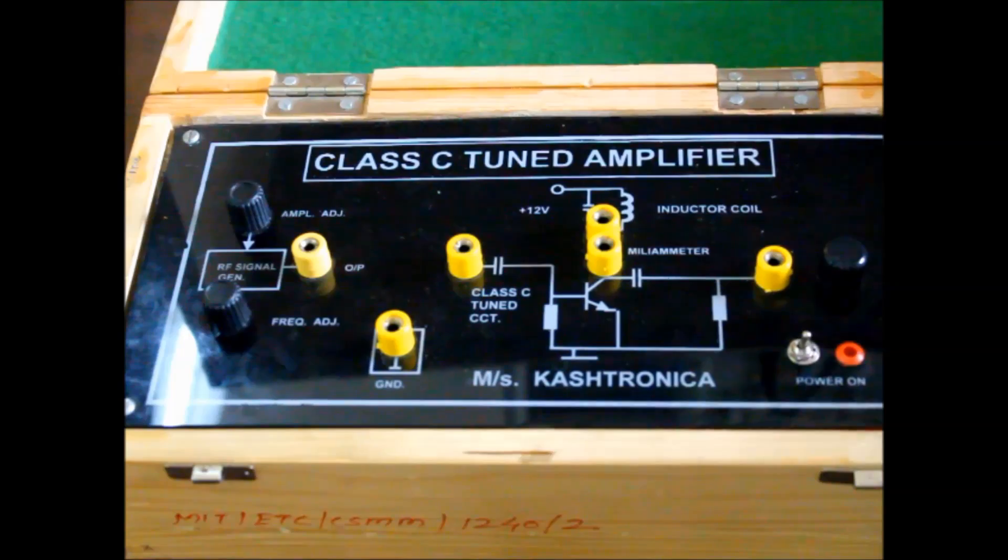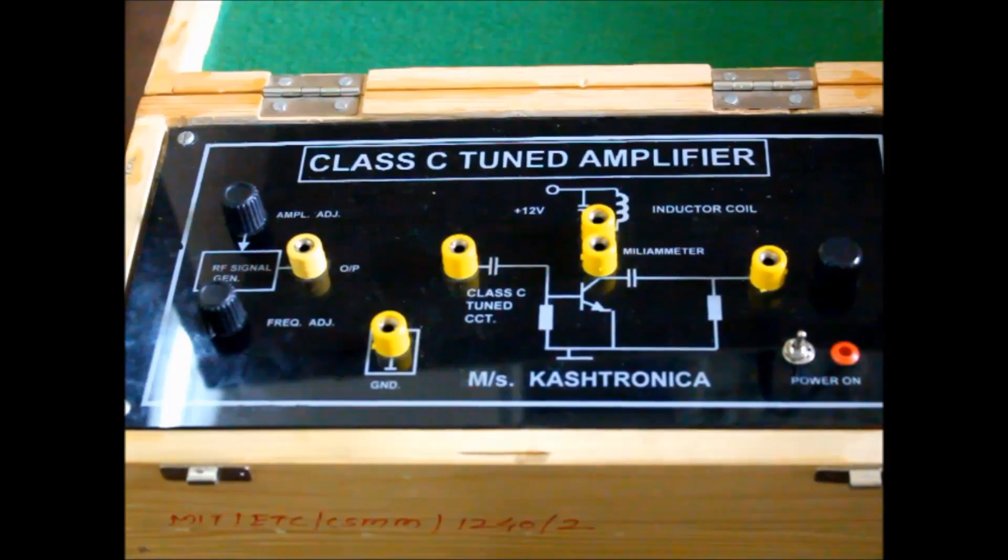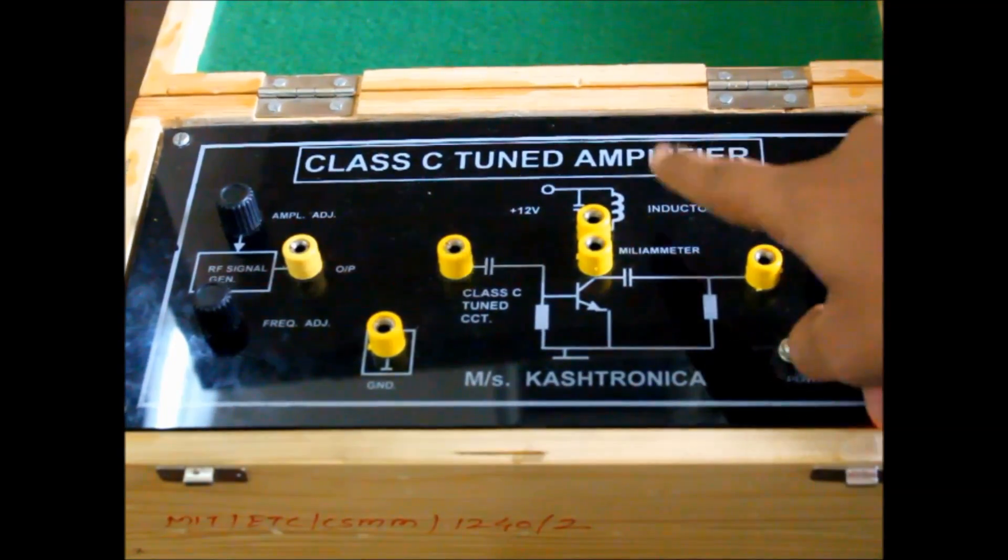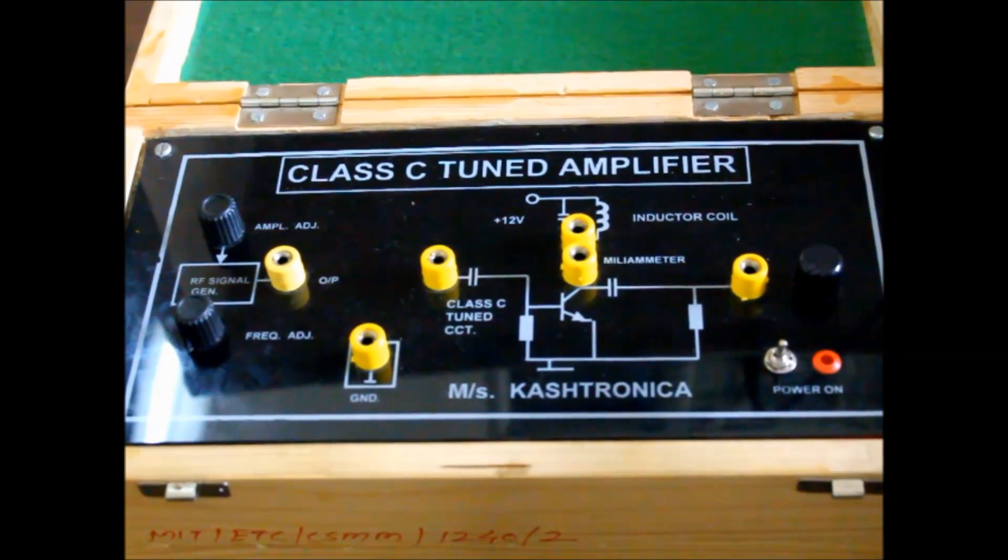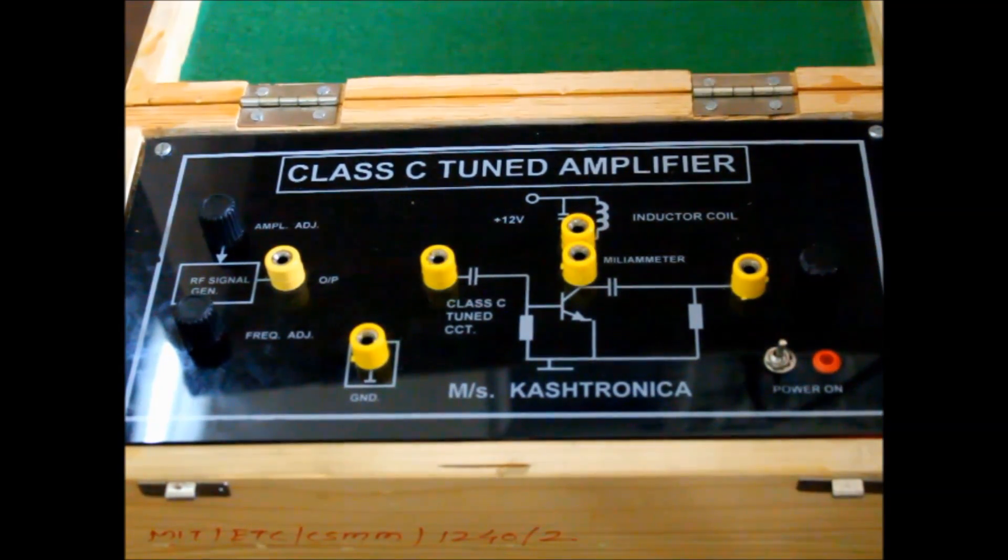Hello guys, today we are going to do the first and easiest experiment: Class C tuned amplifier. Connections are very simple in this experiment. As per the design of the amplifier, we have to adjust the RL, that is the load resistance of this Class C tuned amplifier, at 6.8 kilo ohms.